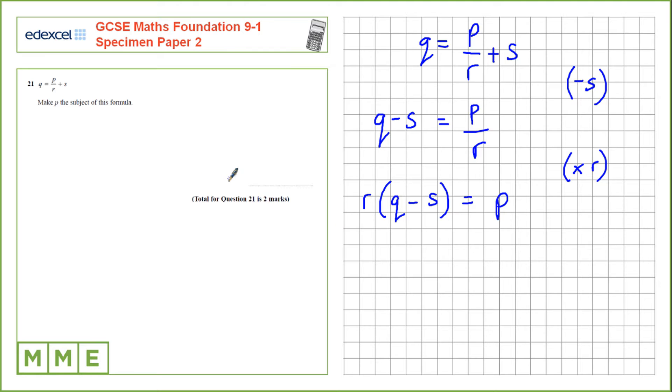So we have this already. That's P equals R Q minus S. Expanding this bracket would have been acceptable. That would be P equals RQ minus RS.